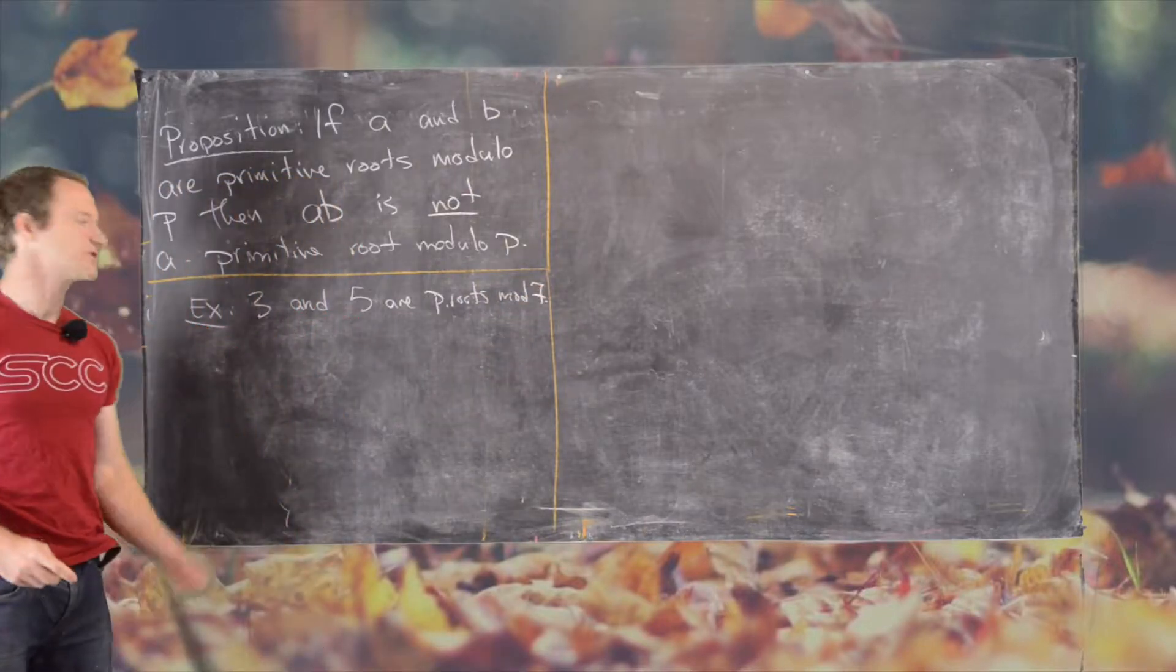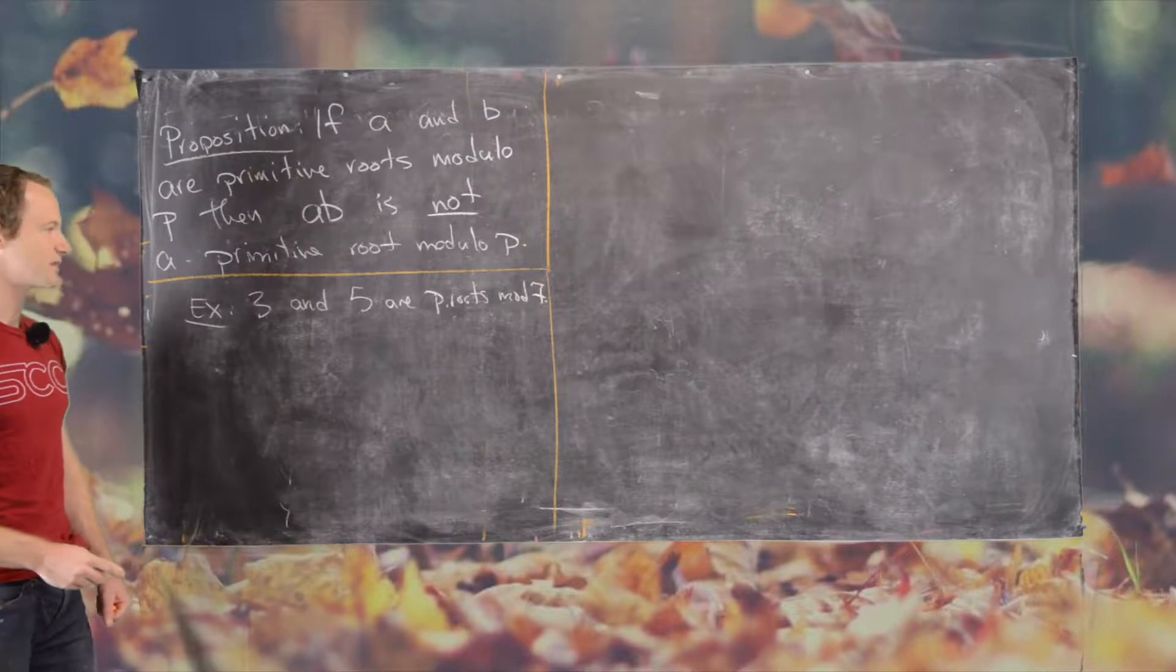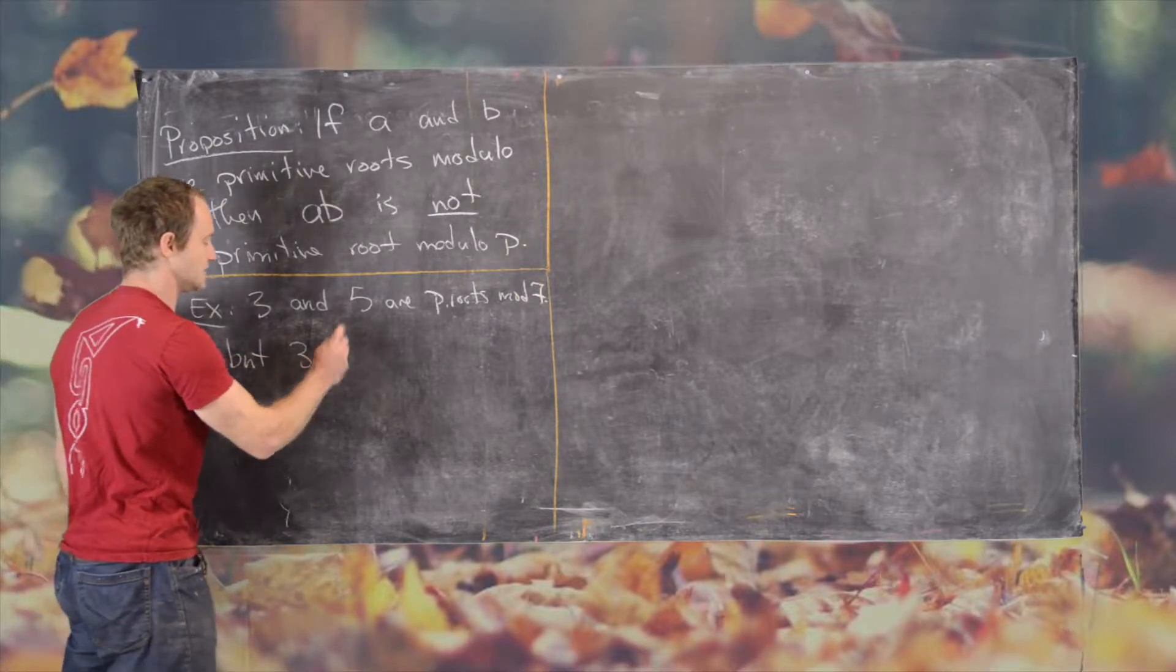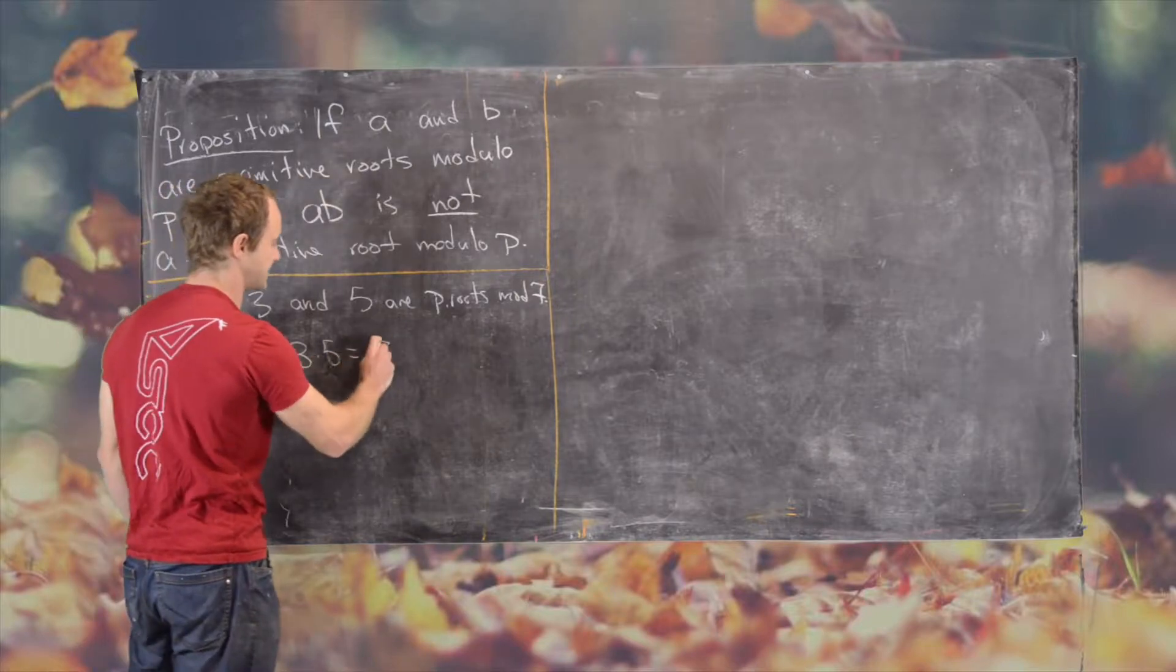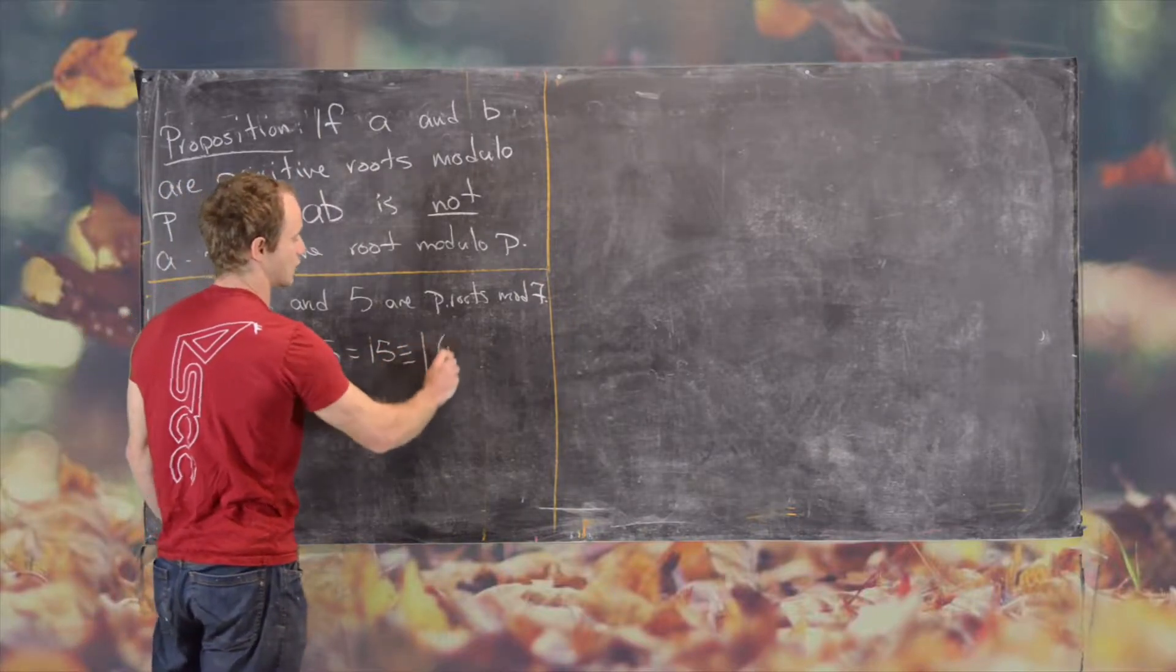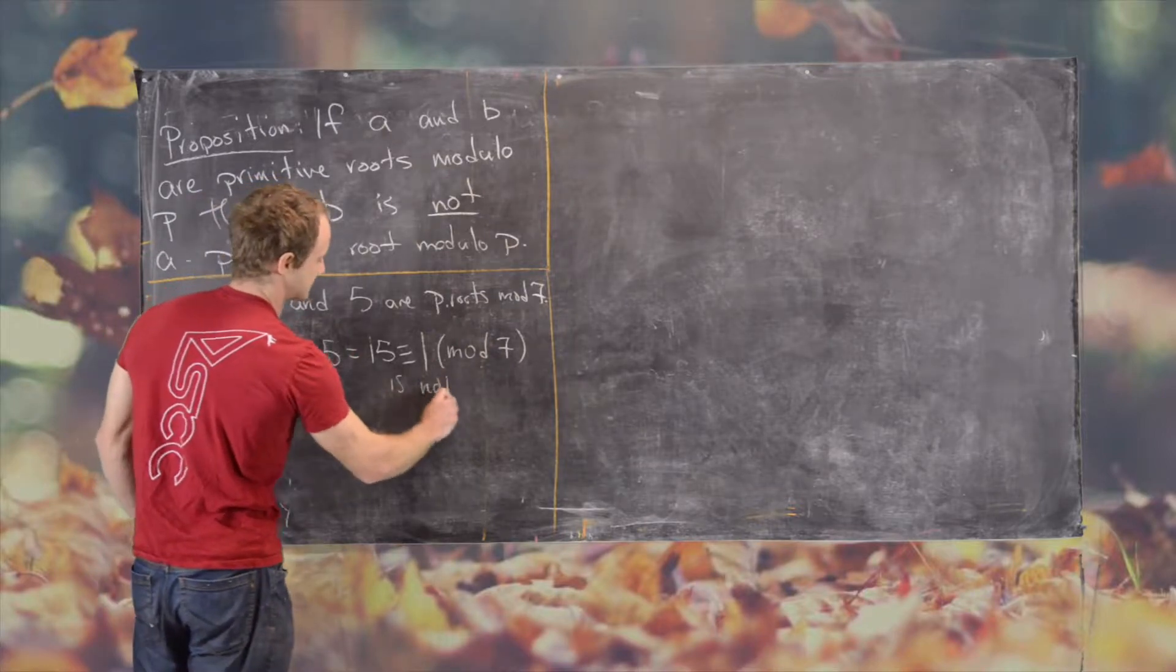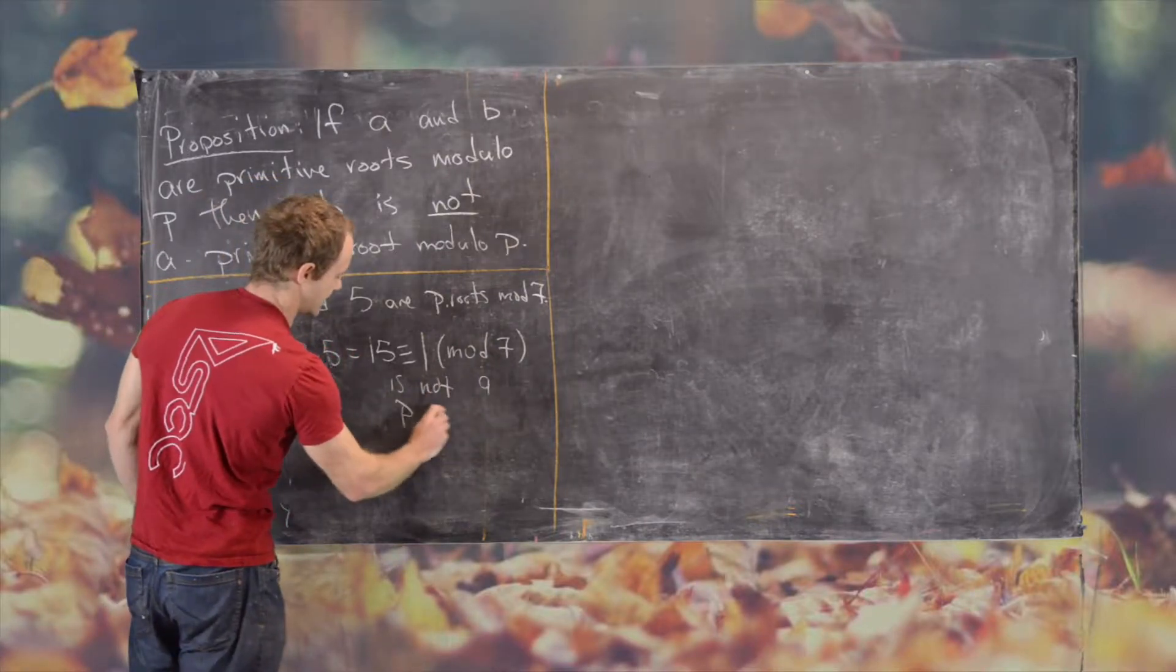So you can check that. I won't check that here in detail, but you can check that pretty easily. But 3 times 5 equals 15, which is congruent to 1 mod 7, is not a primitive root.